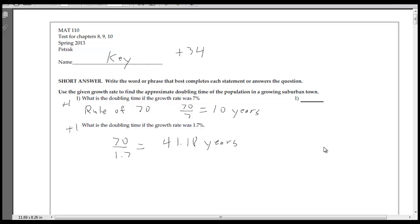This first one is just trying to find out what's the doubling time, and we can use that rule of 70. If you take 70 divided by 7, it's approximately 10 years to double. And then for the second part, if the growth rate is only 1.7%, you take 70 divided by 1.7, it's 41.18 years.